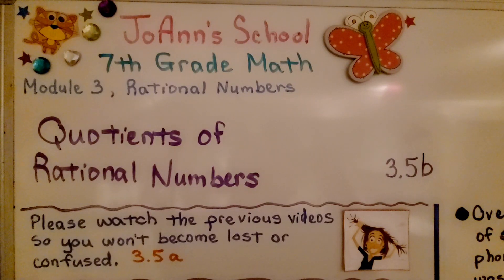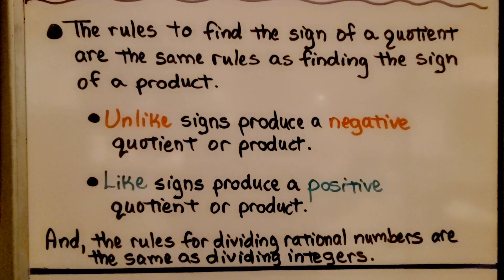Lesson 3.5b: Quotients of Rational Numbers. The rules to find the sign of a quotient are the same rules as finding the sign of a product. Unlike signs produce a negative quotient or product. Like signs produce a positive quotient or product. And the rules for dividing rational numbers are the same as dividing integers.